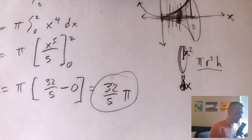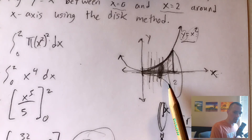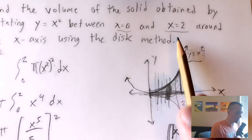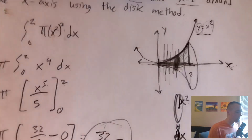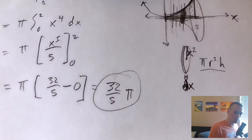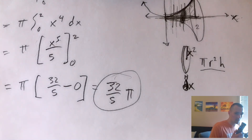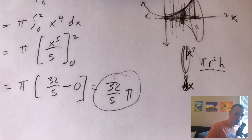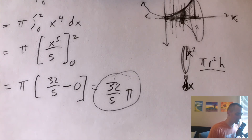That's the volume of the 3D shape obtained by rotating y equals x squared between 0 and 2 around the x-axis, using the disk method. That formula is on my Calc 2 study guide — there's a link in the description to get a copy. Be sure to subscribe to my channel; I've got more videos on how to use the formulas on that study guide and more coming out. Thanks, and see you next time.